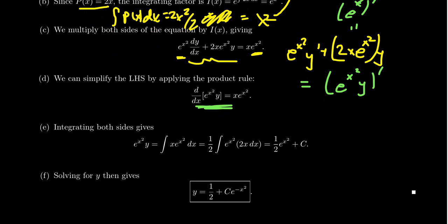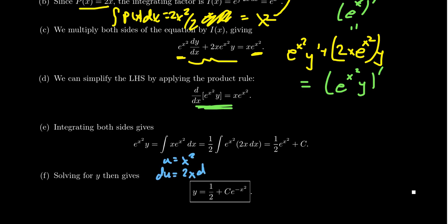Now we integrate both sides. The left-hand side simply becomes i(x)·y, which is e to the x squared times y. For the right-hand side, integrating x times e to the x squared requires a u-substitution: let u equal x squared, so du equals 2x dx. Inserting a factor of 2 and 1/2, the integral becomes 1/2 times the integral of e to the u du, giving 1/2 e to the u plus a constant.